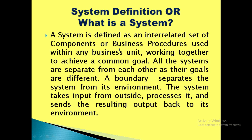When we define a system — what is a system made of? A system is an interrelated set of components. These components are also called business procedures. All these components or business procedures work in correlation, in an interrelated manner, to achieve a common goal. A system is defined as an interrelated set of components or business procedures used within any business unit, working together to achieve a common goal.